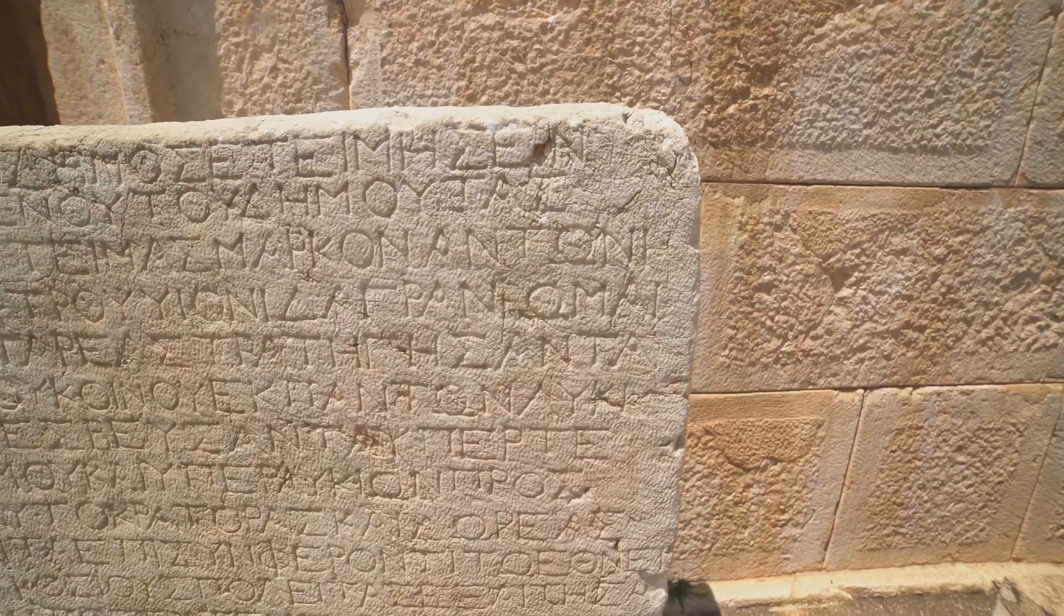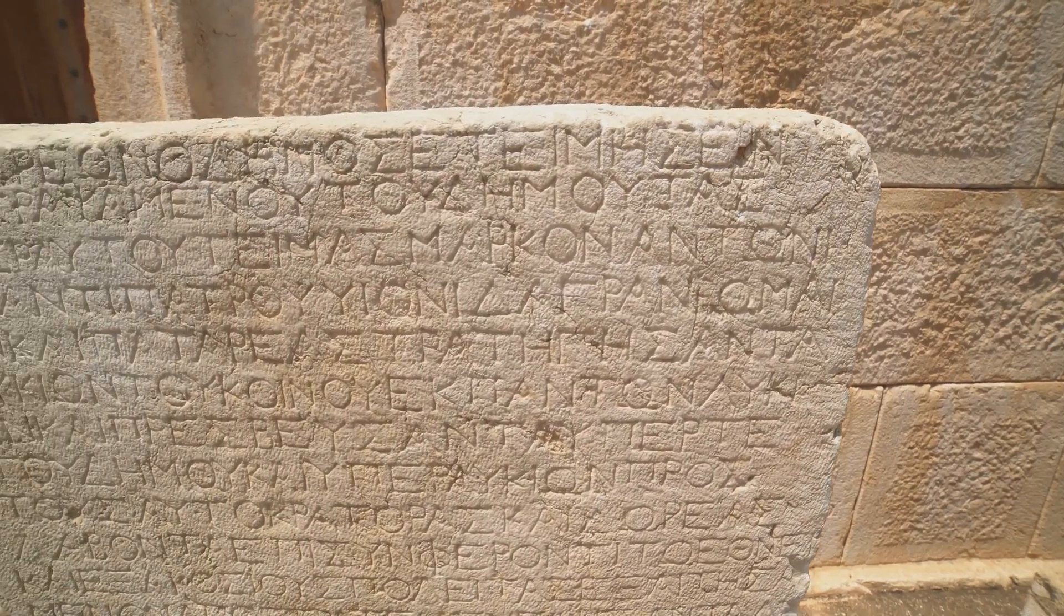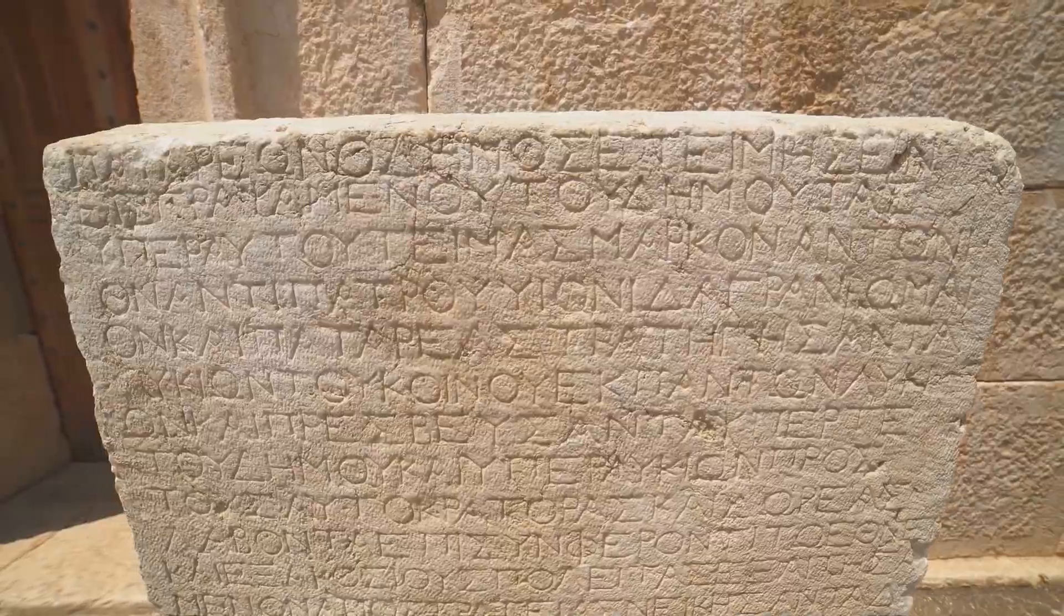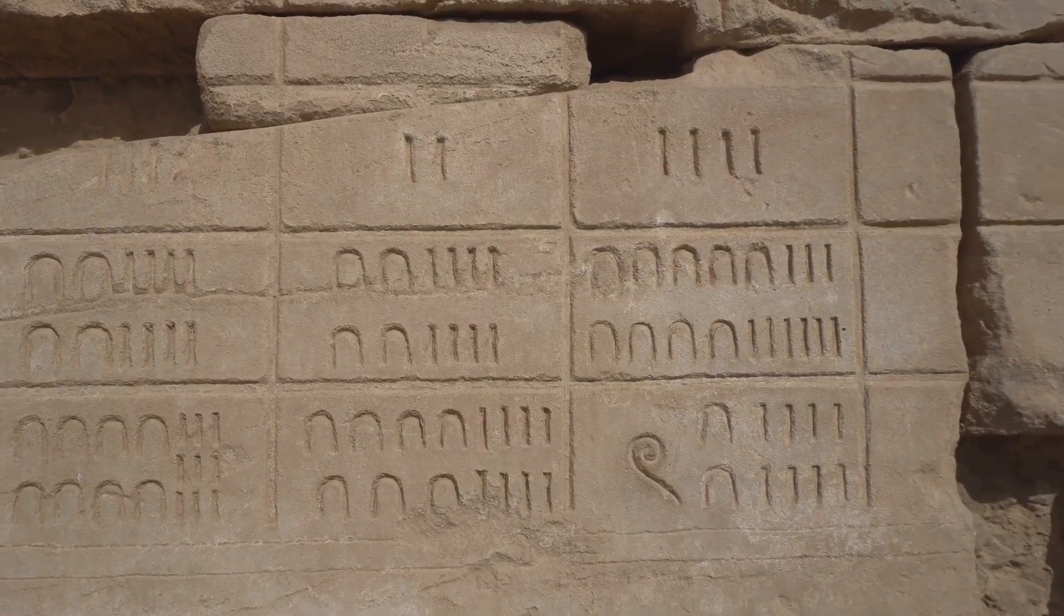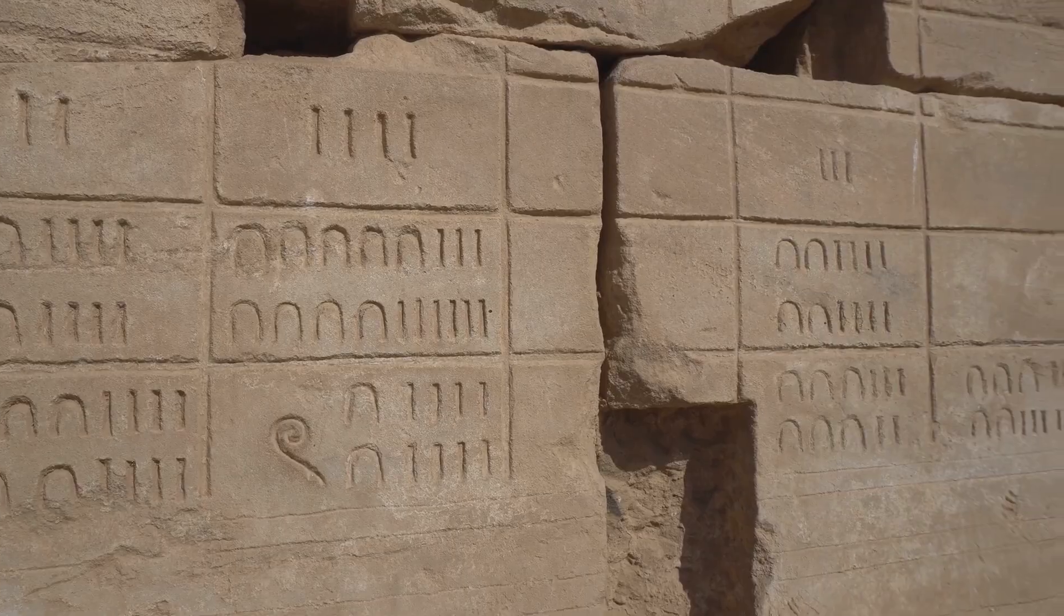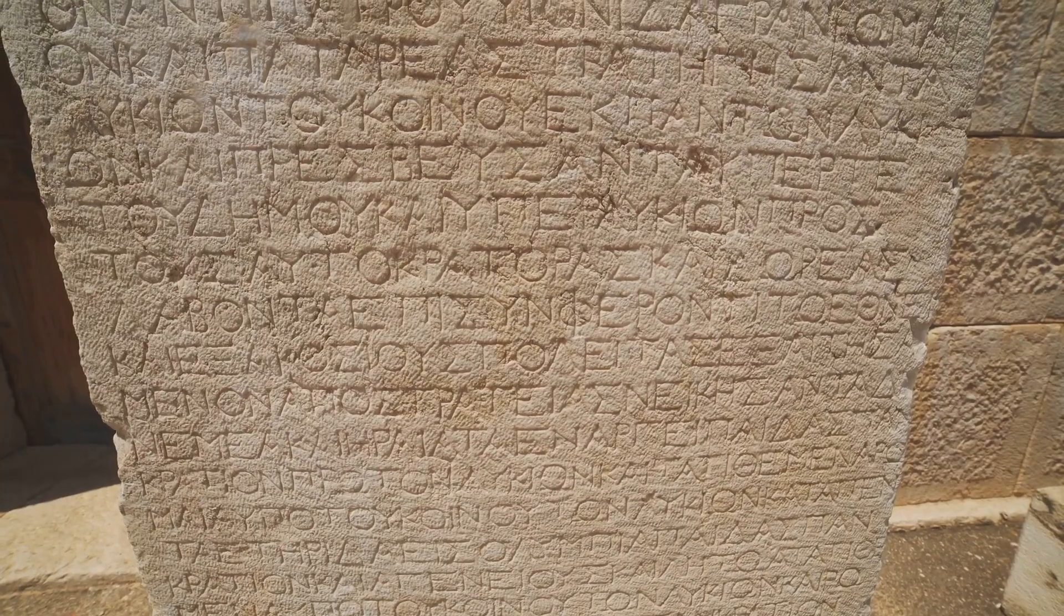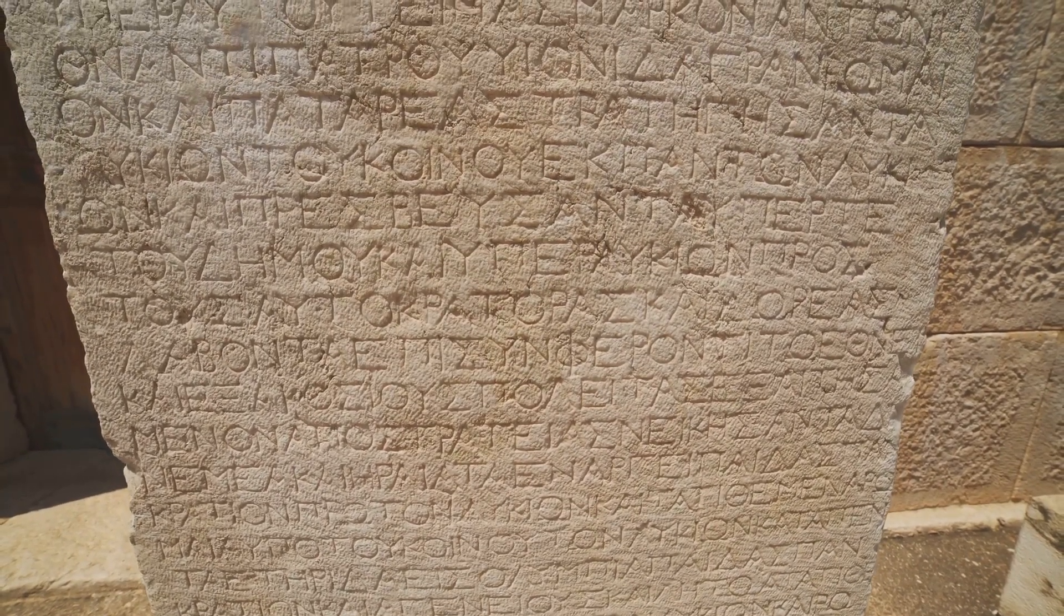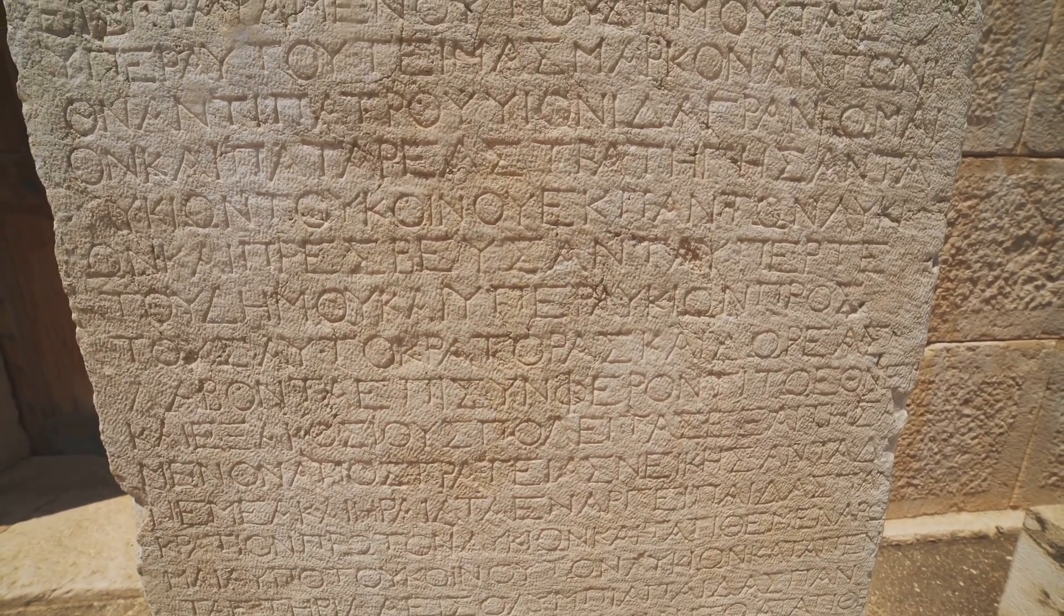The Goldbach conjecture, if proven, could shed light on the enigmatic nature of these primes. It might reveal hidden patterns and help us understand the intrinsic properties of these mathematical atoms. The conjecture could be a Rosetta stone, a key to deciphering the cryptic language of primes.